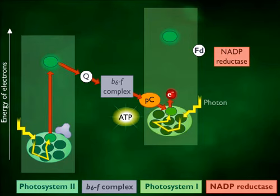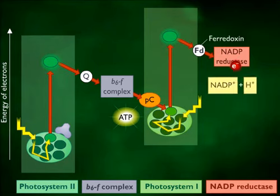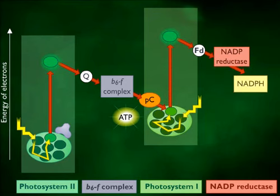When photosystem 1 absorbs a photon of light, it ejects a high-energy electron which is used to drive the formation of reducing power in the form of NADPH. The ejected electron is replaced by an electron from photosystem 2.